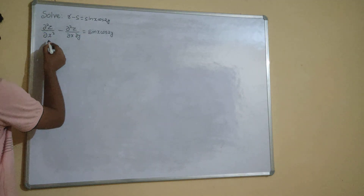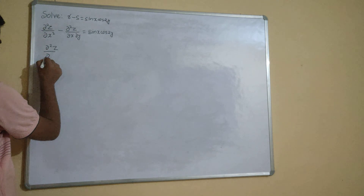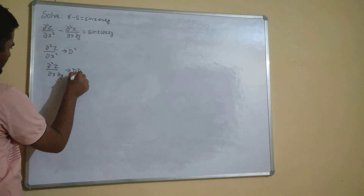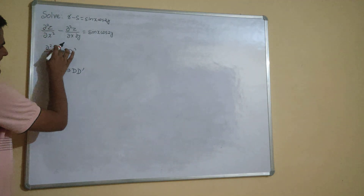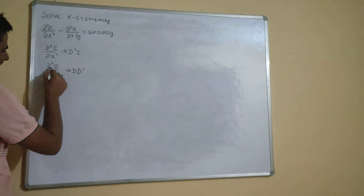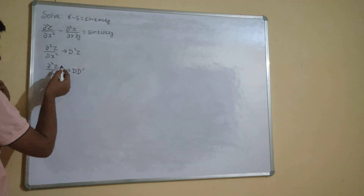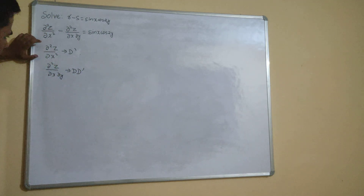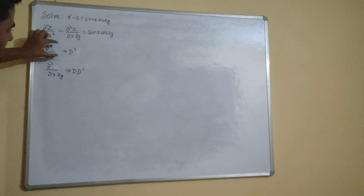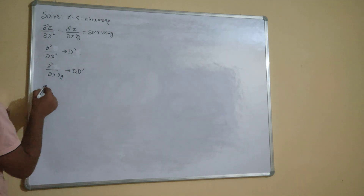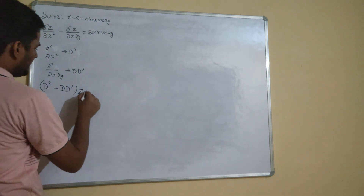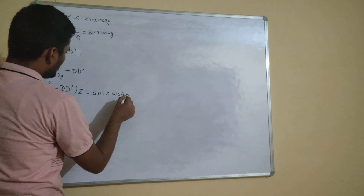Now how to solve this? We write del²z/delx² as D², and del z/del x as D, so del²z/delx² is D² and the mixed term is D·D̄. Removing z, we write the equation simply as D² minus D·D̄ operating on z equals sine x cos 2y.